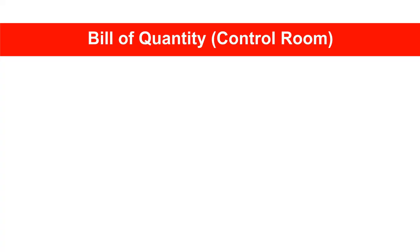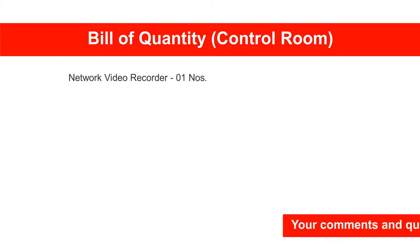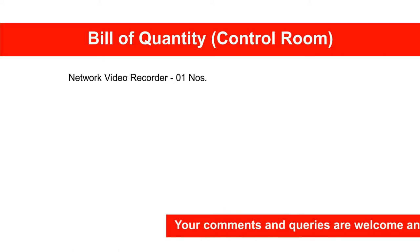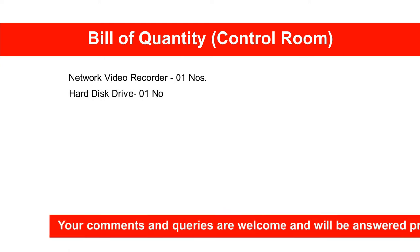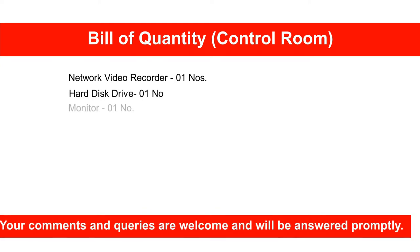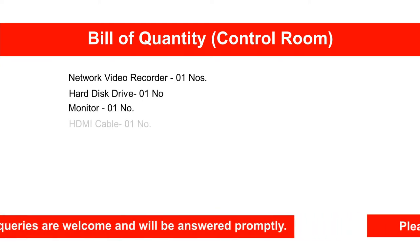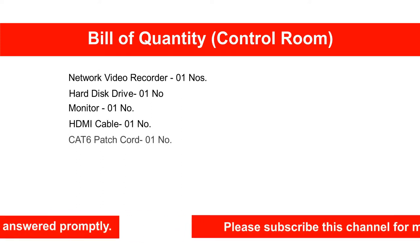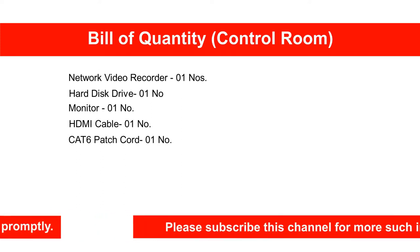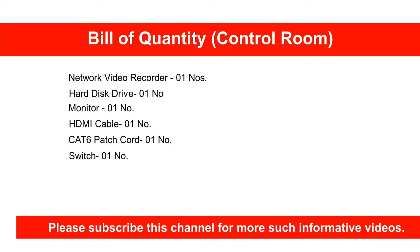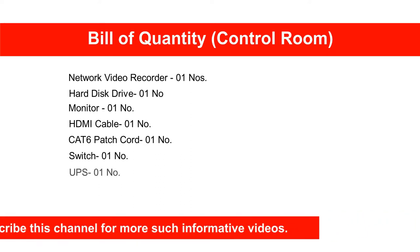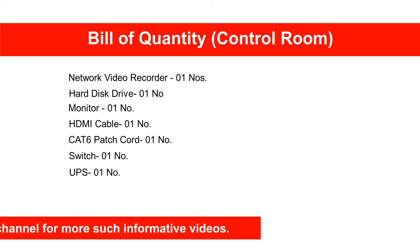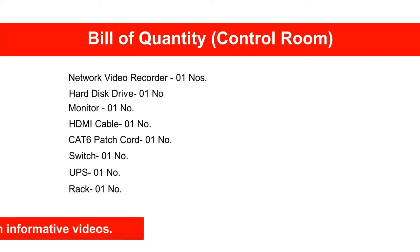The bill of quantity for the control room is: network video recorder 1 number, hard disk drive 1 number, monitor 1 number, HDMI cable 1 number, CAT6 patch cord 1 number, switch 1 number, UPS 1 number, and rack 1 number.